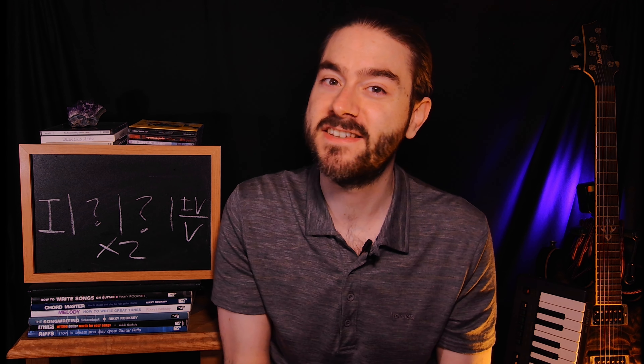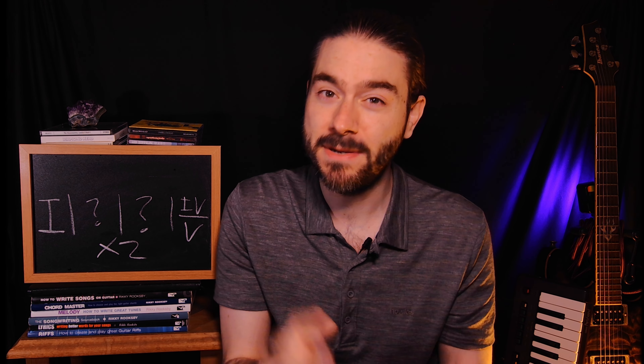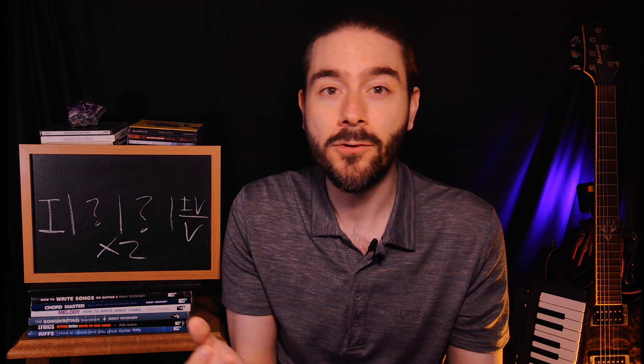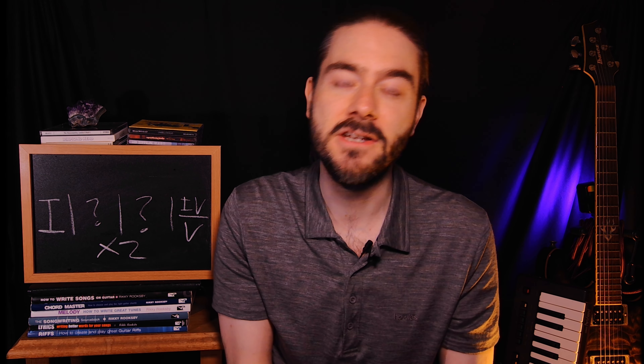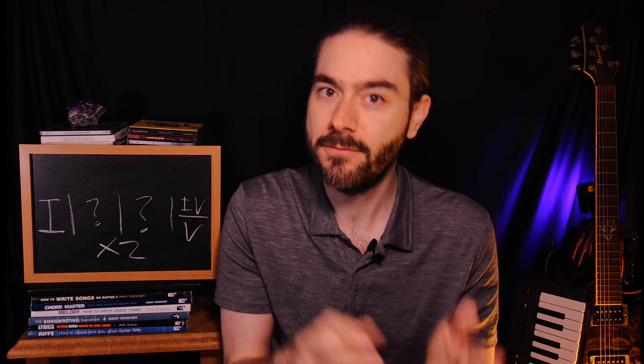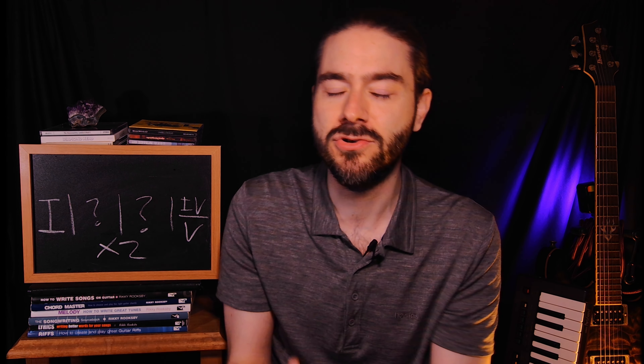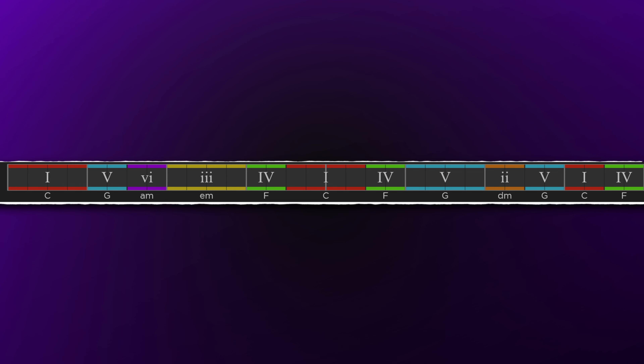The easiest way to try this out is by splitting bars in half. In 4/4 time, this means that you'd play a chord for two beats before changing to a new chord. For example, if I take the Pachelbel's Canon progression and split up some of the bars, it could look like this. Because of the shorter duration, I've filled in the final two bars with a 2-5-1-4 progression to loop us back around.